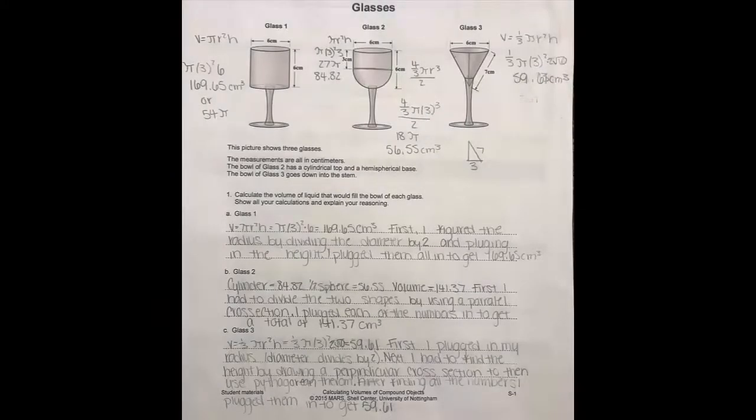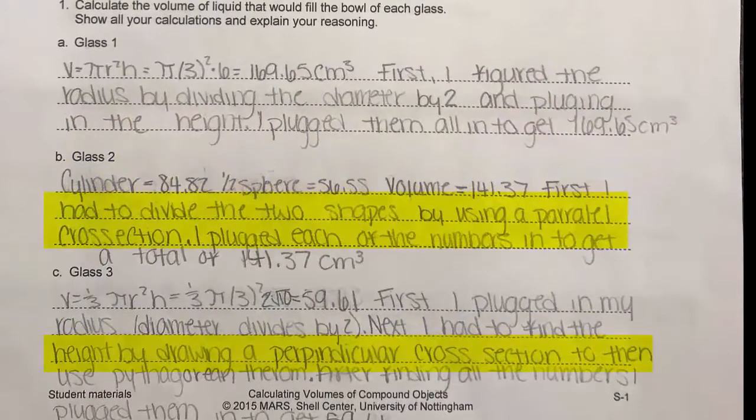The pre-assessment and post-assessment for the FAL calculating volume of compound objects, Glasses, also includes tasks that involve composite volume of cylinders, cones, and spheres. Additionally, it provides an opportunity to make the connection between cross-sections of three-dimensional shapes and using these cross-sections to find needed measurements.